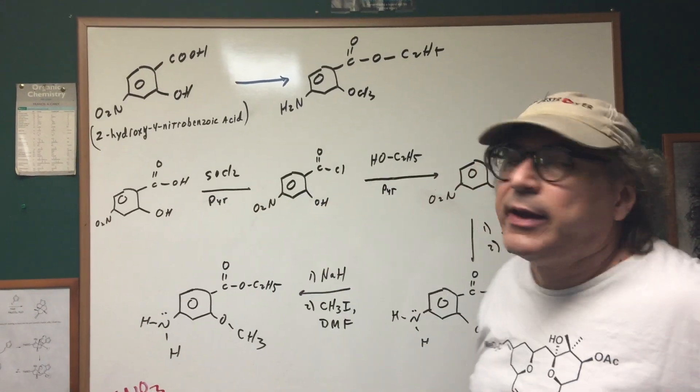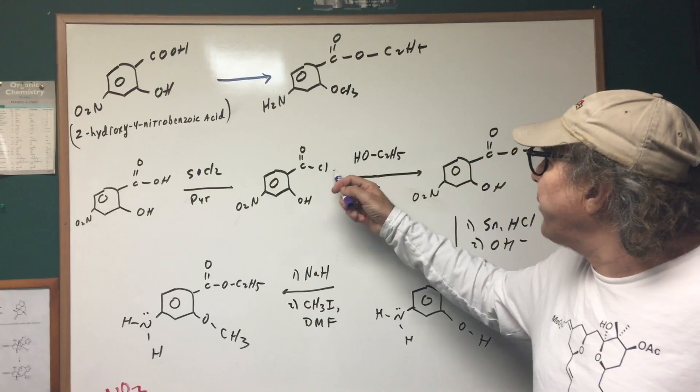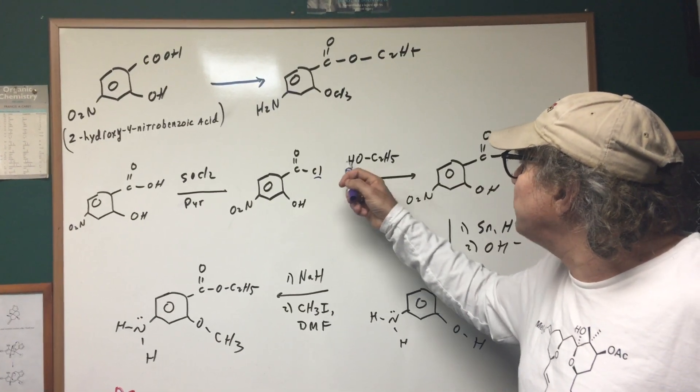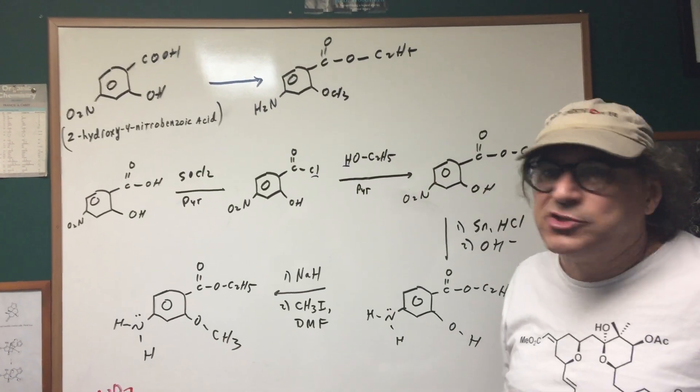My first move was to use SOCl2 to make an acyl halide. Then I'm going to treat the acyl halide with ethanol that splits off HCl. And that gives me my ester group installed.